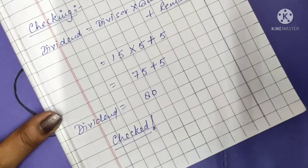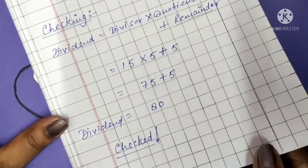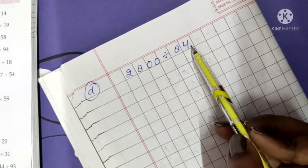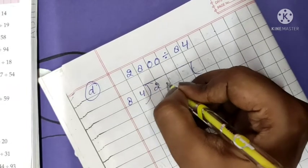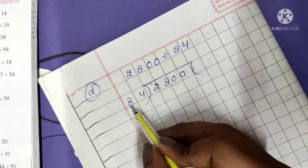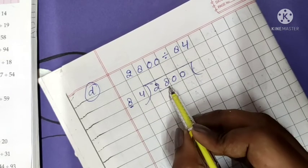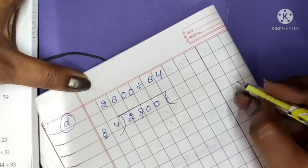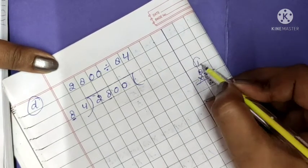I hope this question is clear. Now come to the next part, which is D part: 2800 divided by 84. Write 84 as the divisor and 2800 as the dividend. Read the table of 8 until we reach below 28: 8 × 1 = 8, 8 × 2 = 16, 8 × 3 = 24. So 84 × 3 is possible.